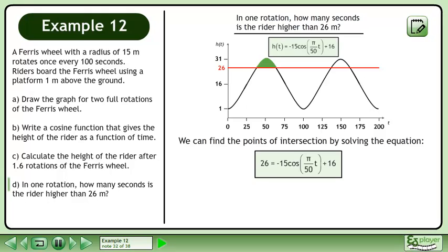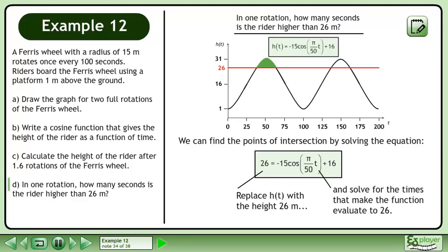We can find the points of intersection by solving the equation 26 equals negative 15 cos pi over 50t plus 16. Replace h of t with the height 26 meters and solve for the times that make the function evaluate to 26.